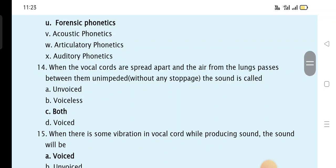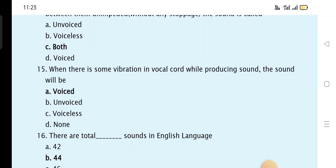When the vocal cords spread apart from each other and the air from the lungs passes through them unimpeded without any stoppage, the sound is called both voiced and voiceless. When there is some vibration in the vocal cords while producing the sound, the sound will be voiced.